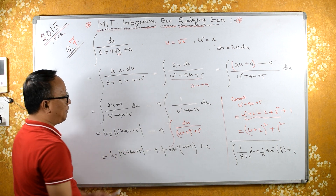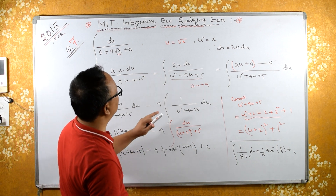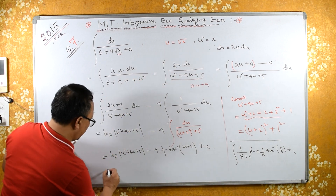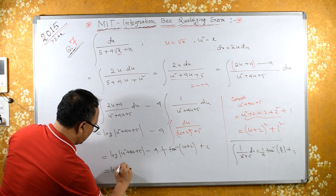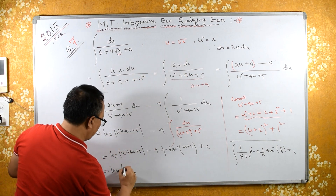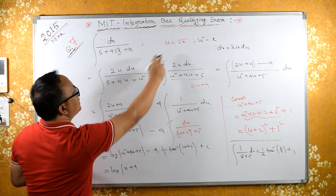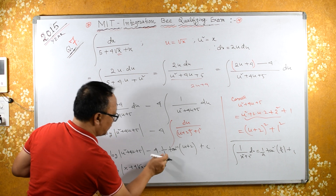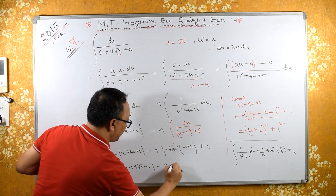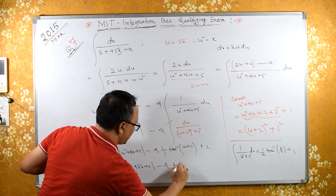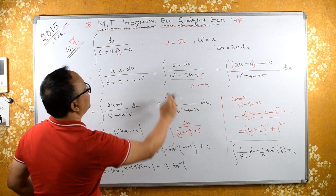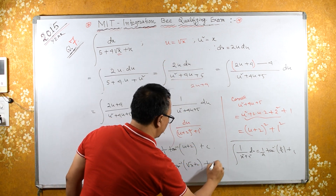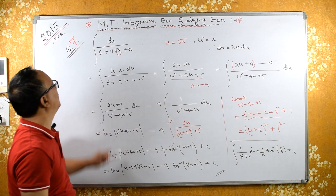Now substituting back: u squared equals x and u equals square root of x. The final answer is log of (x plus 4 root x plus 5) minus 4 tan inverse (root x plus 2) plus c. This is the required answer.